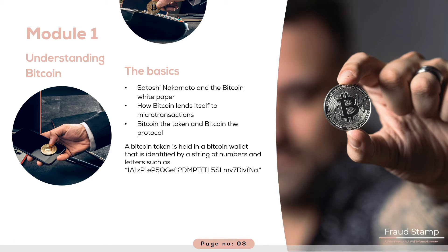The network records each transaction onto these ledgers and then propagates them to all of the other ledgers on the network. Once all of the networks agree that they have recorded all of the correct information, the network permanently confirms the transaction. Bitcoin can be used to pay for things electronically, if both parties are willing. Unlike payment services such as PayPal or credit cards, however, once you send a Bitcoin, the transaction is irreversible — it cannot be called back.